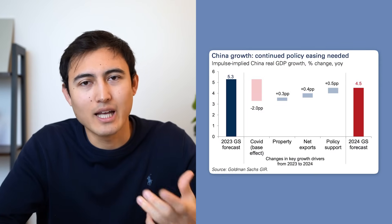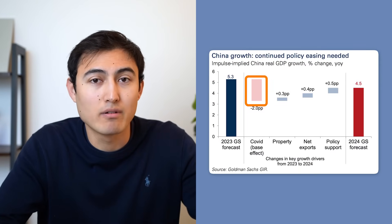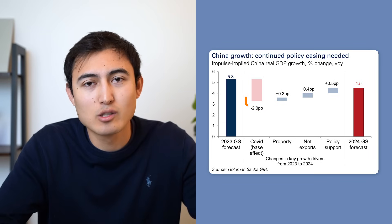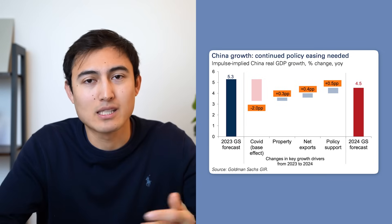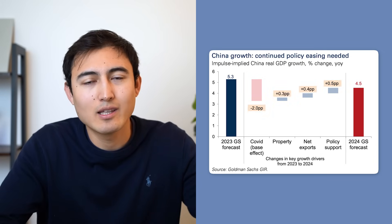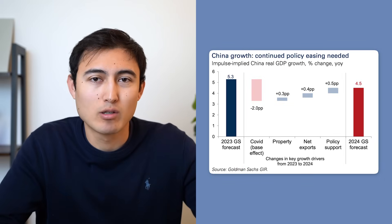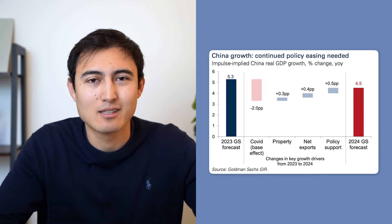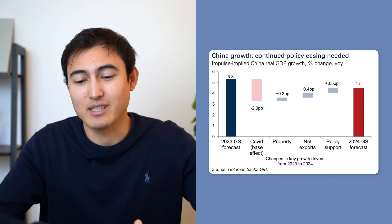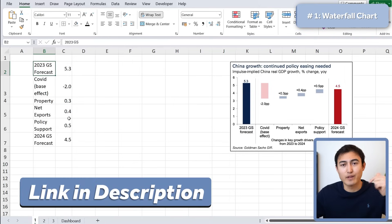First up we have this waterfall chart. What makes this one slightly tricky is the colors seem to have very low opacity, and also the labels have a plus or a minus as well as a 'pp' on the end, so we'll need to learn how to format that, as well as the two vertical lines. Let's take a look in Excel — here's the Excel file we'll be using, which you can download for free in the video description if you want to follow along.